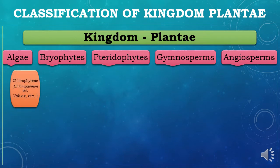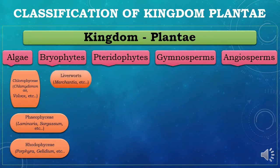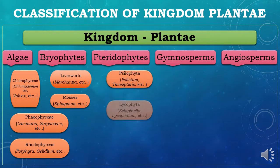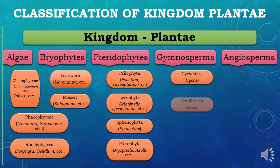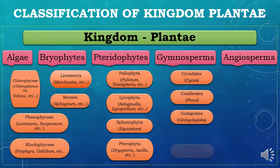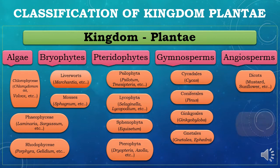Kingdom Plantae is classified into algae, bryophytes, pteridophytes, gymnosperms and angiosperms. Algae is further divided into Chlorophyceae (green algae), Phaeophyceae (brown algae) and Rhodophyceae (red algae). Bryophytes are classified into liverworts and mosses. Pteridophytes are classified into Psilophyta, Lycophyta, Sphenophyta and Pterophyta. Gymnosperms are further classified into Cycadales, Coniferales, Ginkgoales and Gnetales. Angiosperms are classified into two major groups — dicots, which contain two cotyledons, and monocots, which contain a single cotyledon.